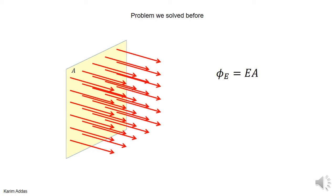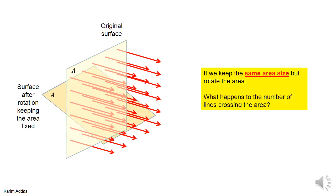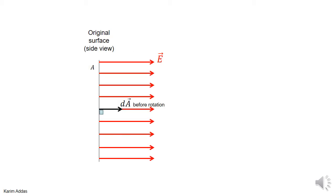A very simple question arises: what if we rotate the surface, keep the area the same size, but just rotate it? What do you think would happen to the number of lines going through the surface? You can see intuitively that some lines that were going through the surface before are not going to be going through the surface when the area rotates, so you should expect the number of lines going through the surface to decrease.